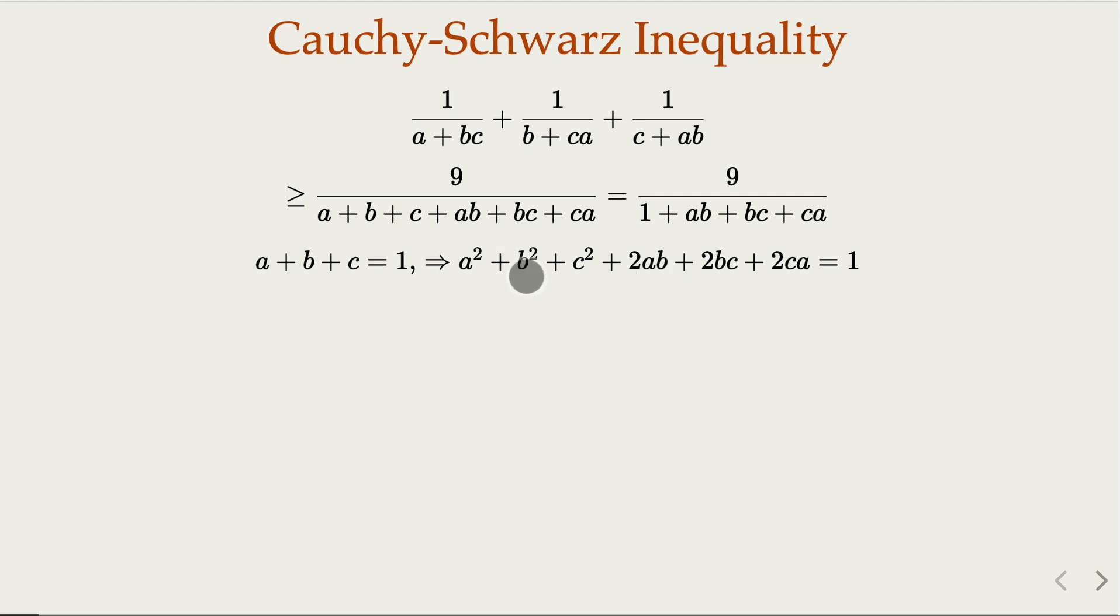And notice that for the AM-GM inequality, you have this result. When you add them up, you're going to have 2 of that, greater or equal to 2 of this cross product here. So this is a very common inequality here with 3 variables.